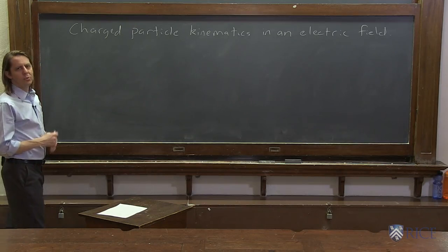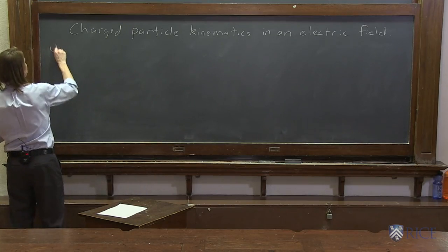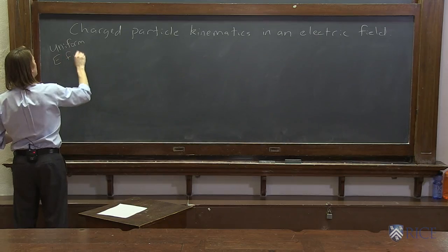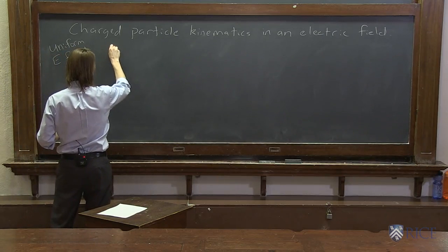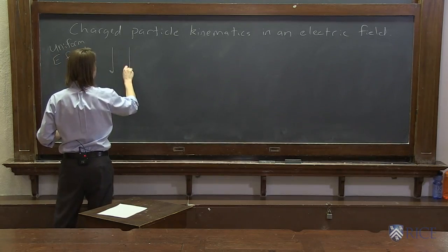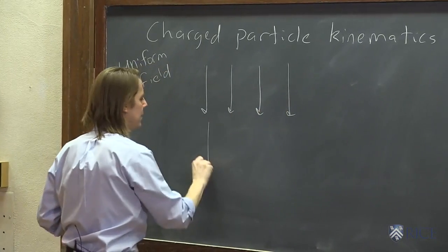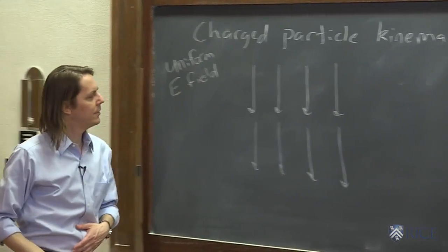Now we're going to do the one you usually see, which is to think about kinematics in a uniform E field. Do you remember this one? And in this case, we're going to have it point down. So I usually just draw a bunch of the field vectors like this to indicate a uniform electric field. And I try to make them all look the same.